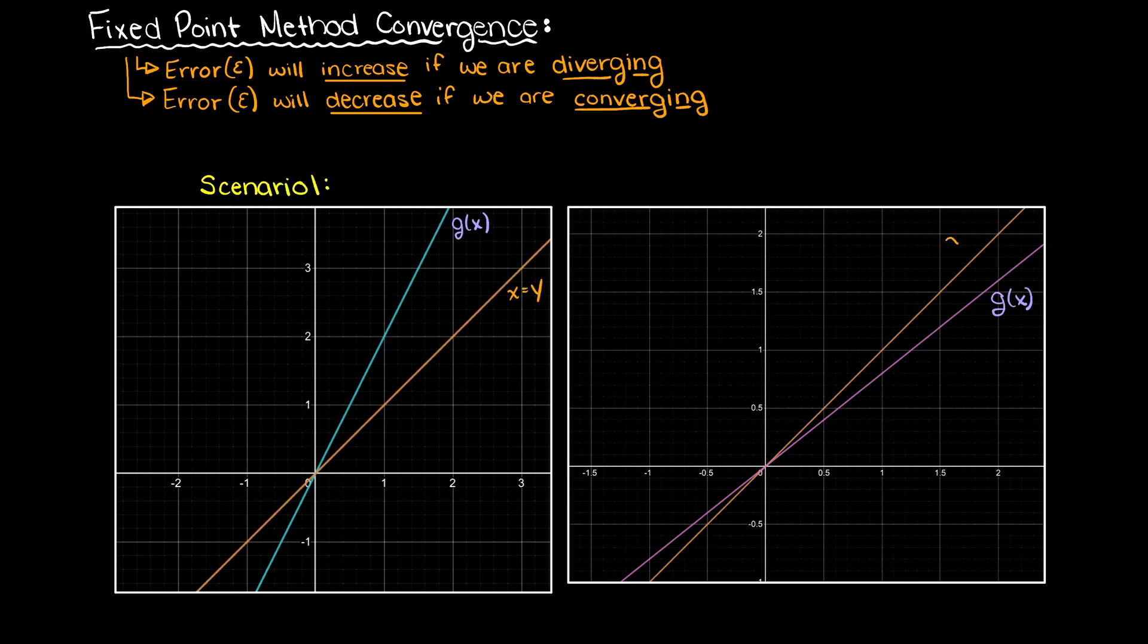Let's look at these two g(x) functions here. In Scenario 1, we have a constant sloping g function that is greater than 1. If we apply the fixed point method visually, we choose some starting point, evaluate the function at that point, then move to our output equals input line, and then continue in this manner.